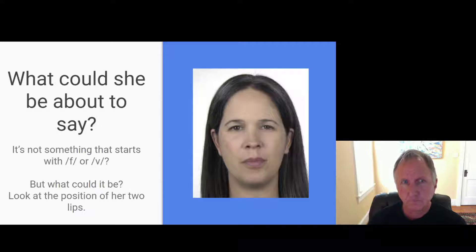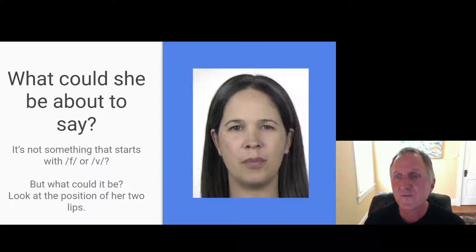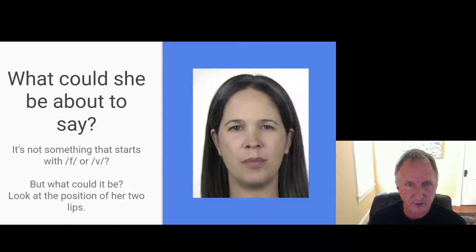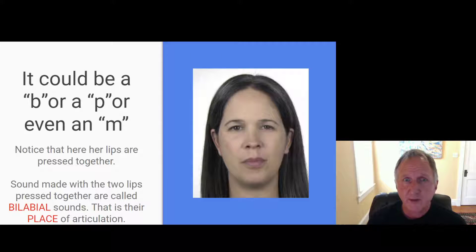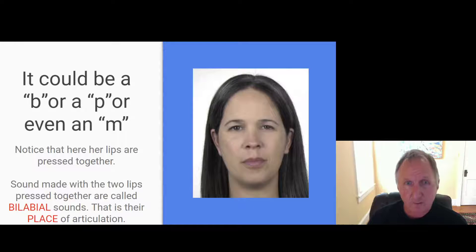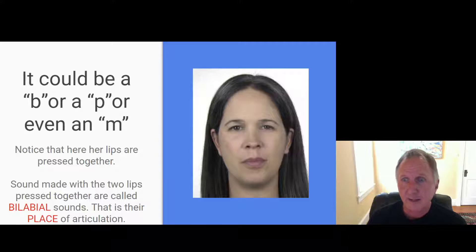Now look at this different picture. What could she be about to say? It's probably not something starting with F or V because her lips aren't in that position. Think about the position of her two lips — they're pressed together. It could be a B, a P, or even an M: 'pa,' 'ma,' 'ba.' Any sound made with the two lips pressed together is called a bilabial sound; that is their place of articulation.